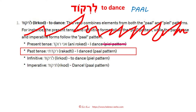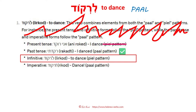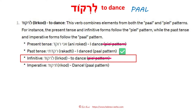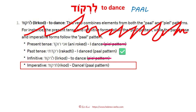Past tense: rakadeti — correct, I danced, paal. You got one line correct. Infinitive: lirkod, to dance — no, it's not piel, it's paal. We are in paal. Look at the headline. Imperative: it says rikod, well not exactly, it is rekod, dance — yes, paal pattern. Let me correct that with nikud because the transliteration is a little edgy. The summary is terrible — it got just one line right. We give it another chance.